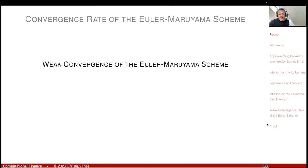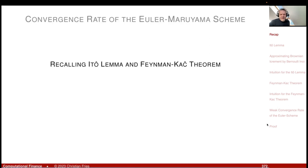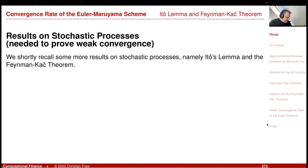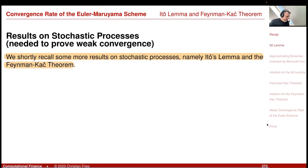Let's prove the weak convergence of the Euler scheme. In the proof I need Itô's Lemma and Feynman-Kac theory — actually the proof is a very nice connection of the two. So let's recall Itô's Lemma and Feynman-Kac needed in the proof of weak convergence.